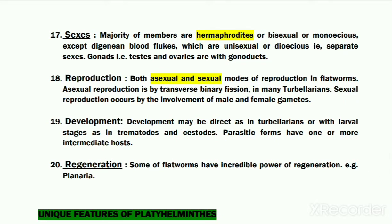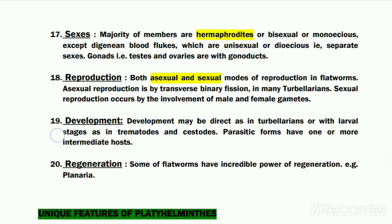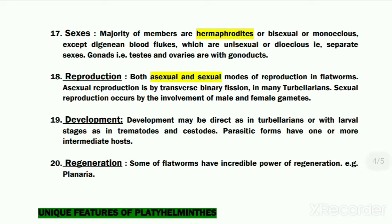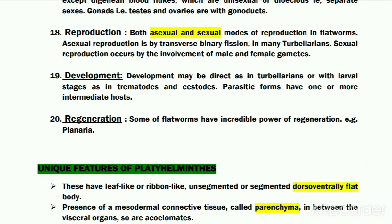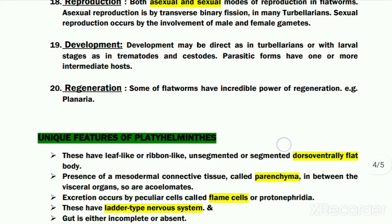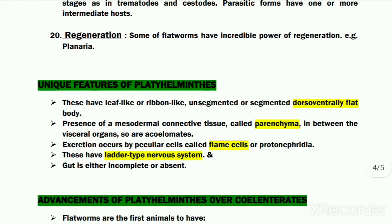Development is direct in case of most turbellarians, but in the other two classes — class Trematoda and Cestoda — development is indirect, involving the formation of a few larval stages. Regarding the power of regeneration, few members belonging to class Turbellaria exhibit this power, meaning if a body part is lost accidentally it can be regrown.